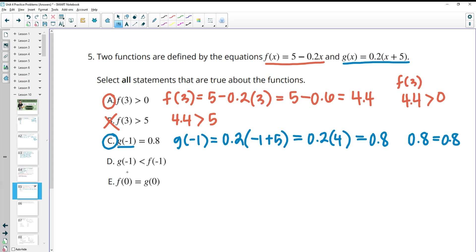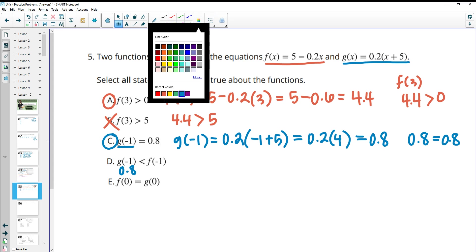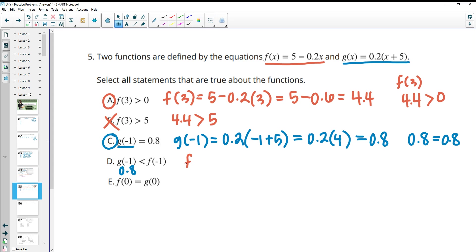Then in part D, it's asking us, is g(-1) < f(-1)? Well, we already know g(-1) is 0.8. We just figured that out. So let's figure out what f(-1) is. So we're going to plug -1 into the f function. So we're going to get 5 - 0.2 times -1. And -0.2 times -1 is positive 0.2. So we're going to get 5.2 for f(-1). So is 0.8 less than 5.2 is what this is really asking. And that is true.